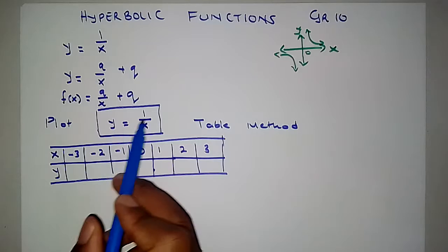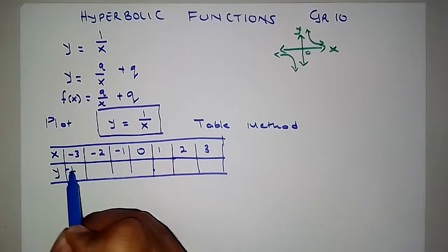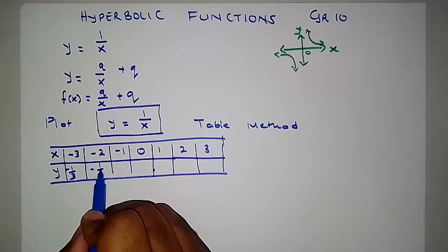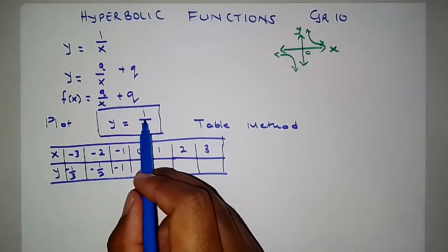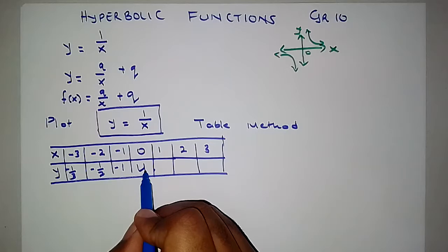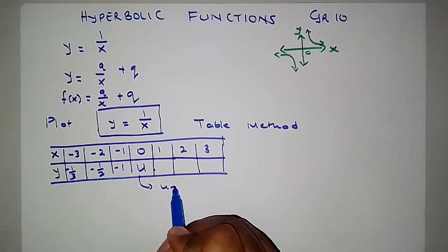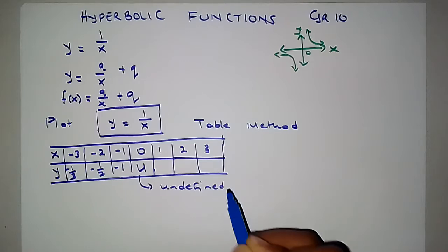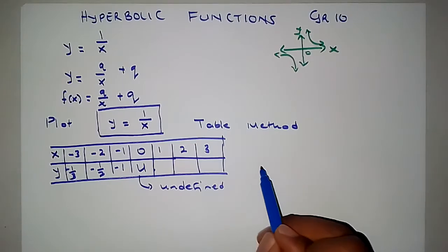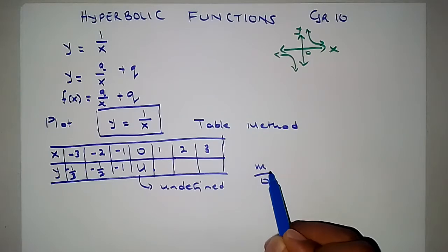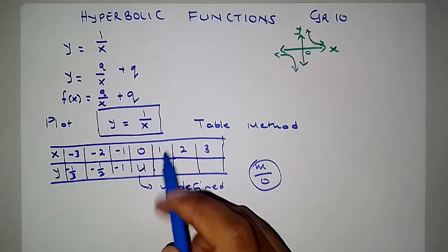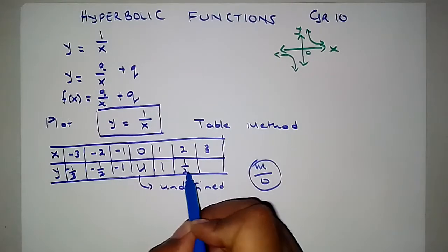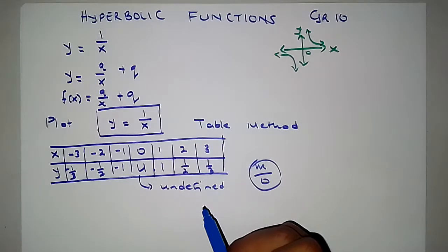Inserting x values into y = 1/x: for x = -3, y = -1/3; for x = -2, y = -1/2; for x = -1, y = -1. For x = 0, it's undefined — any number divided by 0 is undefined. Then for x = 1, y = 1; x = 2, y = 1/2; x = 3, y = 1/3.